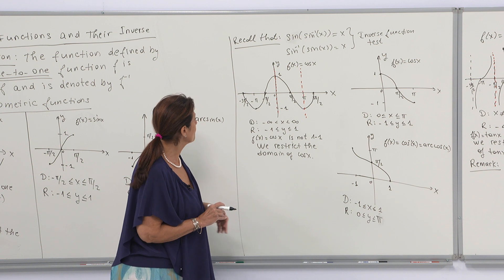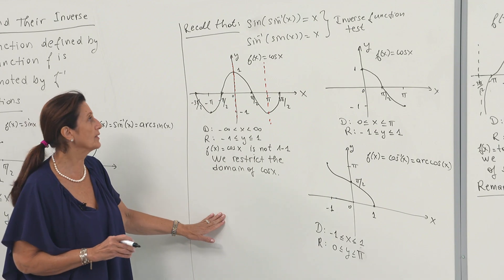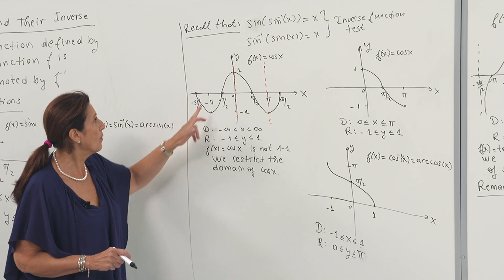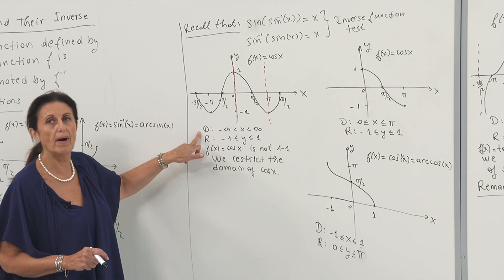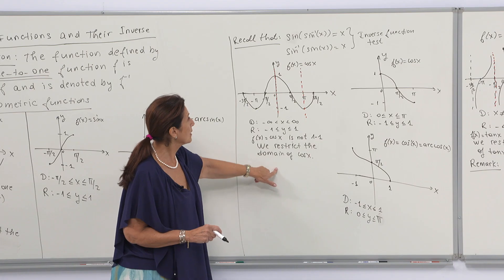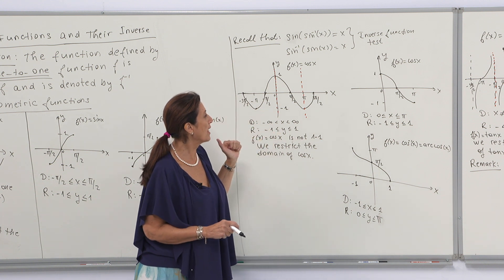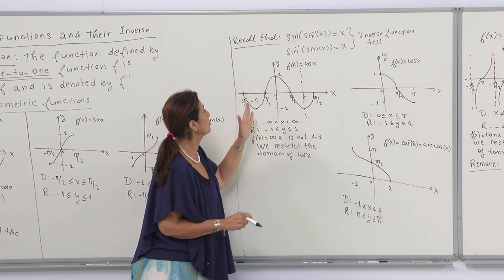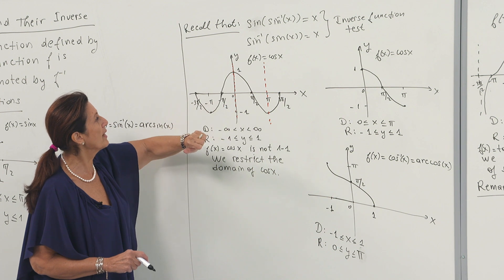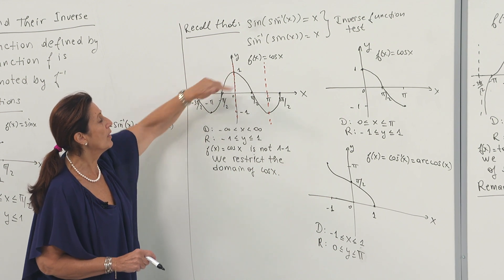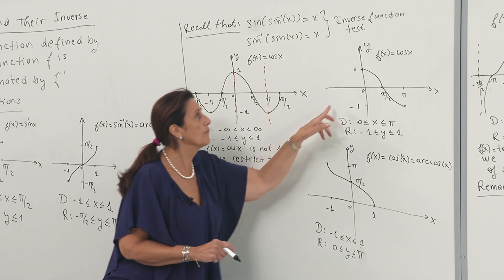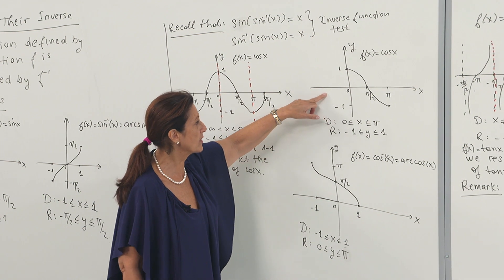That's why I recalled this. Here we have the graph of the cosine function. We have the same problem — it's not one-to-one. The domain of the cosine function is from minus infinity to infinity, and the range is from minus 1 to 1. It's not good to restrict from minus π/2 to π/2 because when you restrict the domain like this, you still do not have a one-to-one function. That's why we restrict the domain from 0 to π.